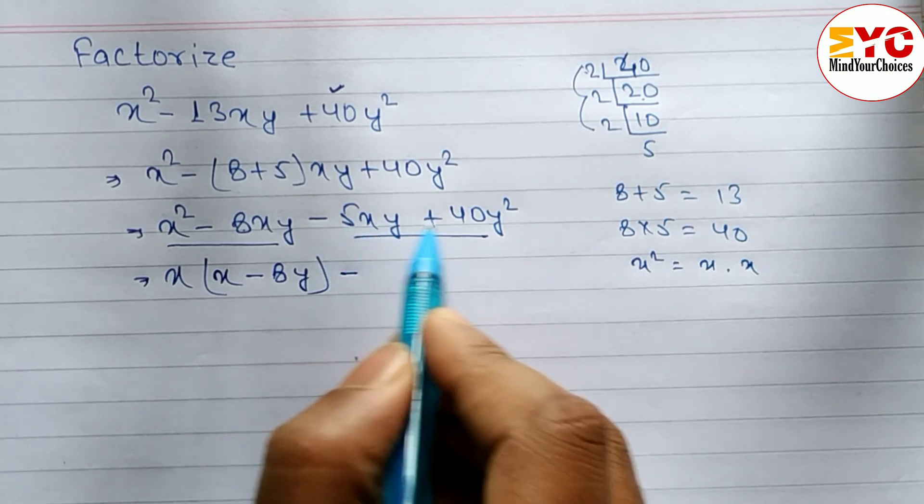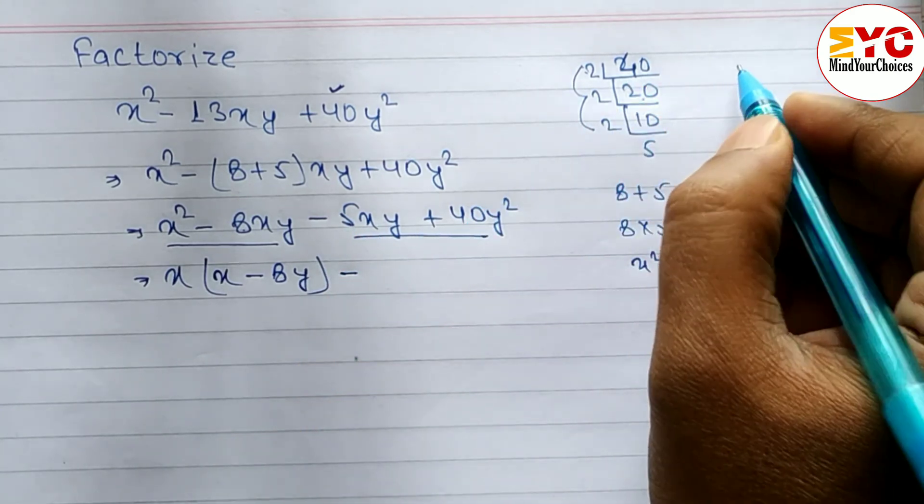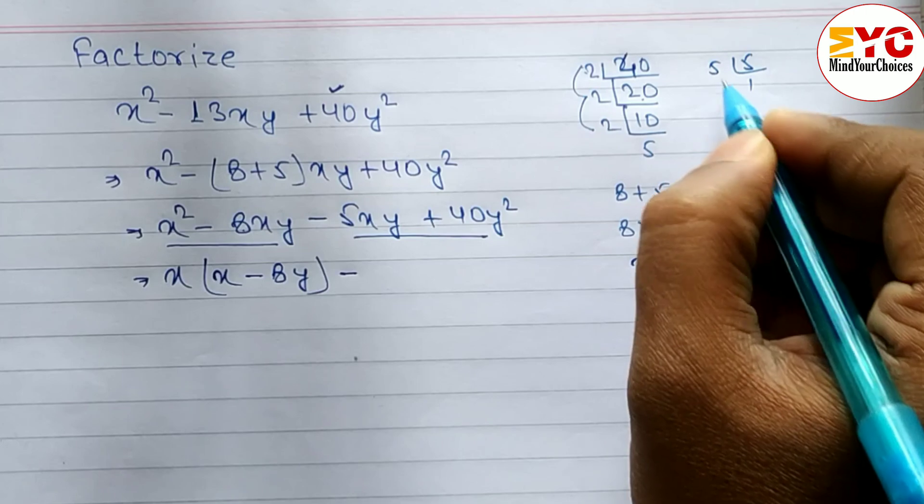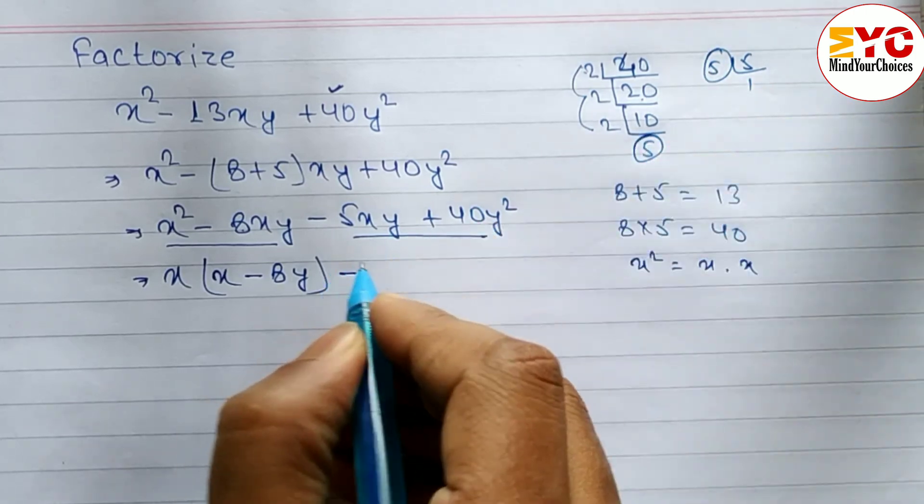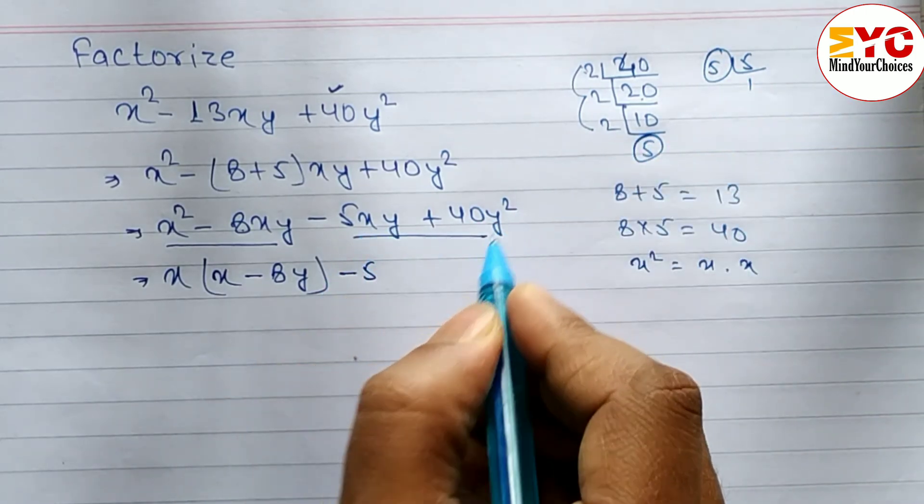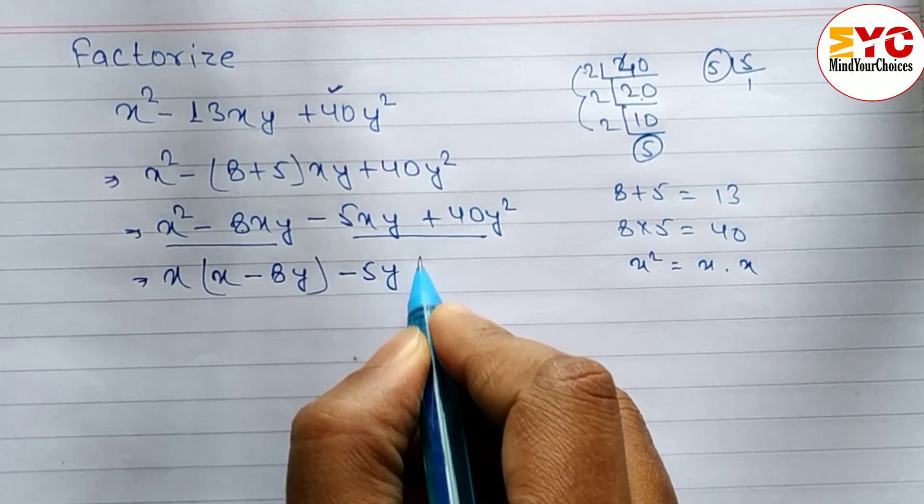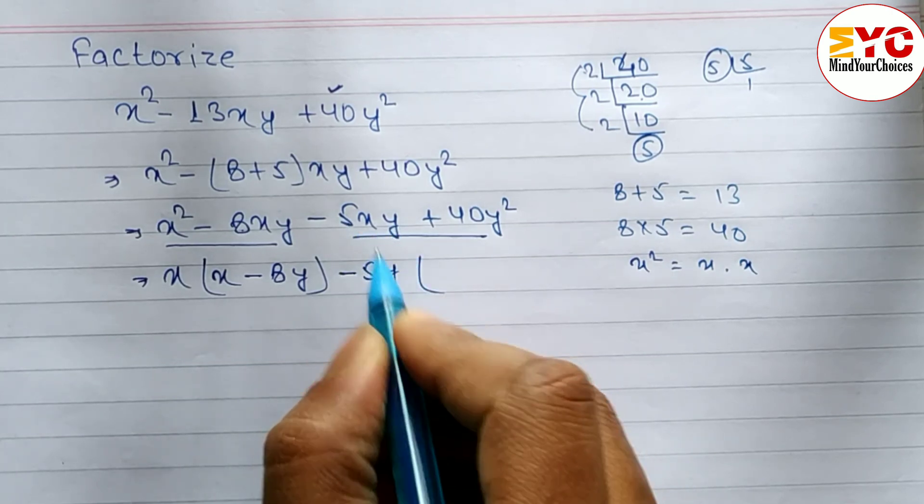Similarly, we can see minus 5 and 40, so we can take 5y common. From 5xy and y square, we take y common. What remains is x minus 8y.